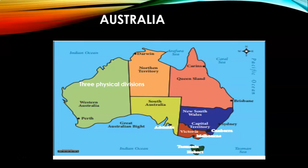Political Division. There are six states and two Union Territories in Australia: New South Wales, Queensland, South Australia, Tasmania, Victoria, Western Australia, Northern Territory, and the Capital Territory (Canberra). Each state has its own state constitution. Canberra is the capital of Australia. Australia has 8,222 islands.